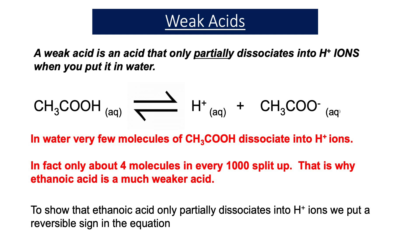Here we have ethanoic acid splitting up into H⁺ ions and ethanoate ions. In water, very few molecules of ethanoic acid dissociate — in fact there are about four molecules in every thousand that split up — and that's why ethanoic acid is a much weaker acid than hydrochloric acid. To show that ethanoic acid only partially dissociates into H⁺ ions, we put a reversible sign in the equation.